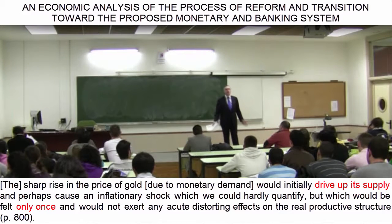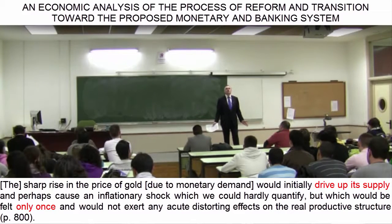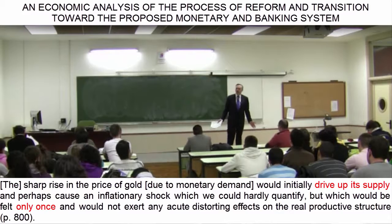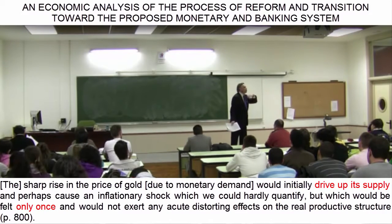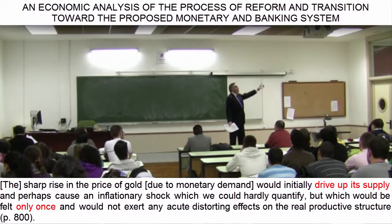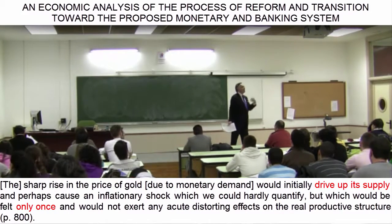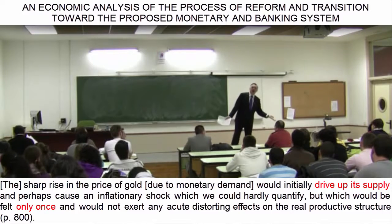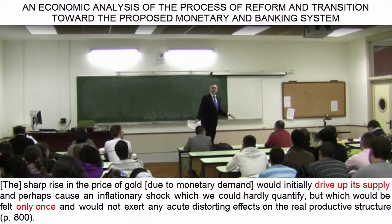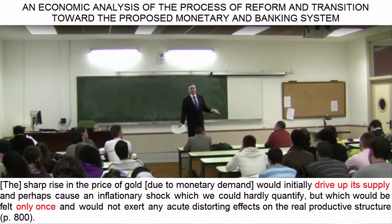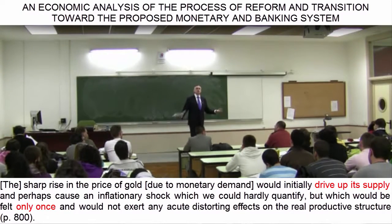At present, an ounce of gold costs a little over $1,000. The price could climb to five or ten times that much, and as a result, the exchange would be followed by a monetary shock due to the influx of gold. In other words, gold would come out of the woodwork.